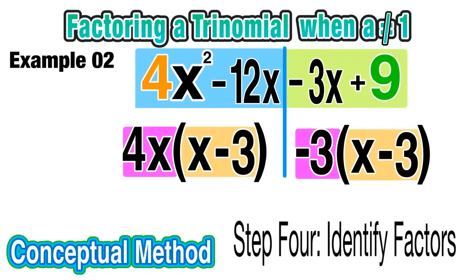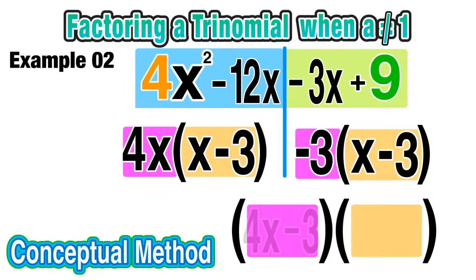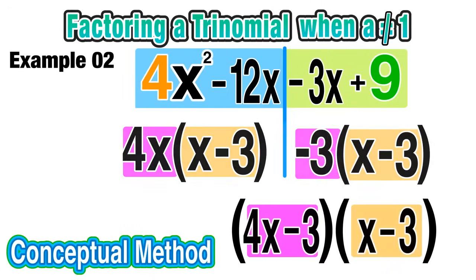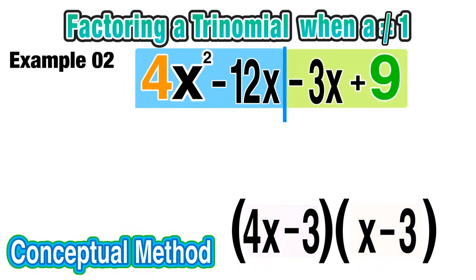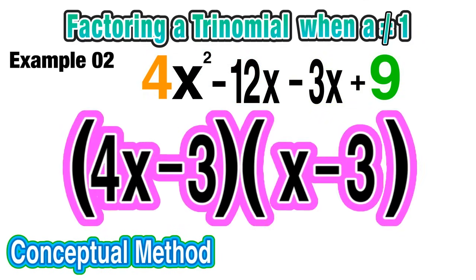We see that they both have an (x-3) in common, and then our outside terms are 4x and -3. So we can conclude that our first factor is (4x-3) and our second is (x-3). So using those four steps sums up the conceptual method for factoring any trinomial where a does not equal 1. You can go ahead and multiply those factors together to check that your answer is correct, but that's pretty much how you do it. Just keep those steps in mind, and remember the more you practice, the easier this will get. Thank you again for stopping by, I really hope this was helpful, and we'll see you guys again next time.